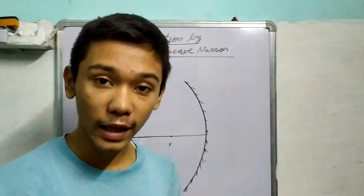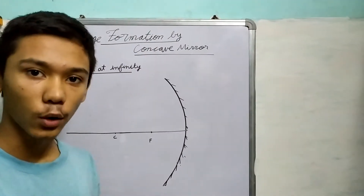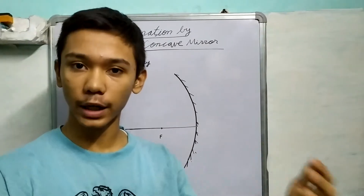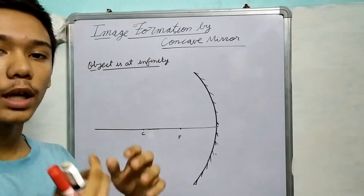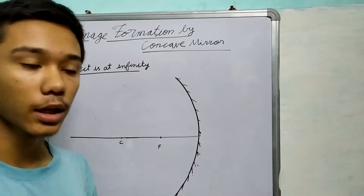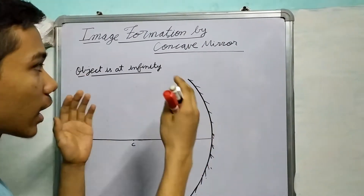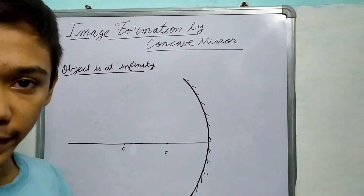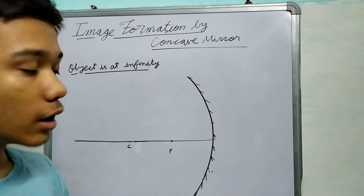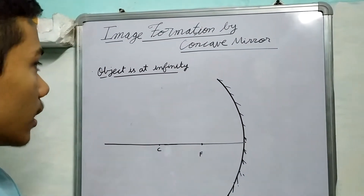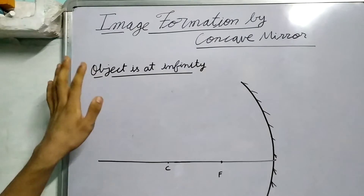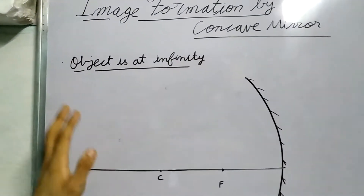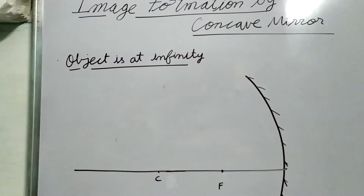Hello everyone. Today in this video and a couple of videos, we will see how images are formed when we take a concave mirror and a convex mirror. Today we will see what will happen if the object is placed at infinity.